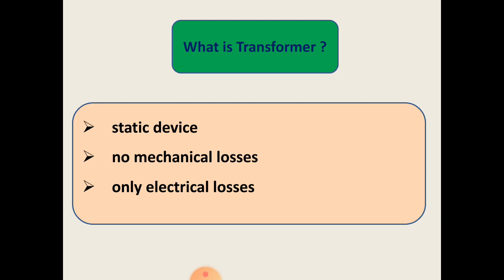In an actual transformer, output power is lesser than the input power. The efficiency of the transformer is defined as the ratio of output power to the input power. Usually there are a number of energy losses in actual transformers, due to which efficiency is always lesser than 100%. Most transformers have full load efficiency between 95% to 98.5%.